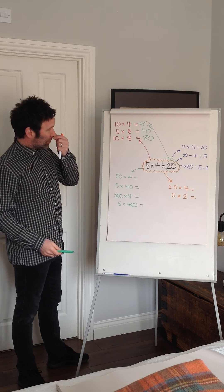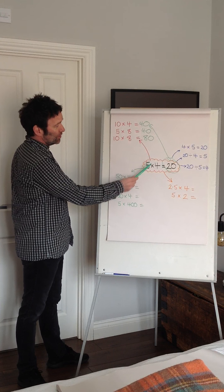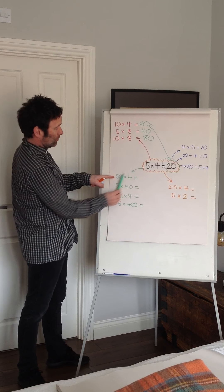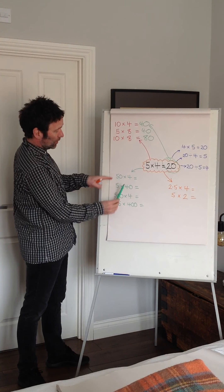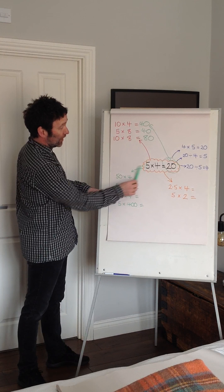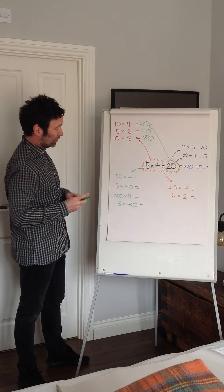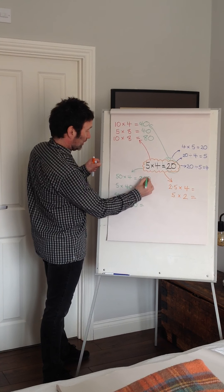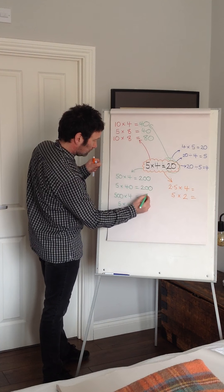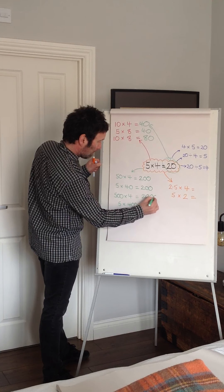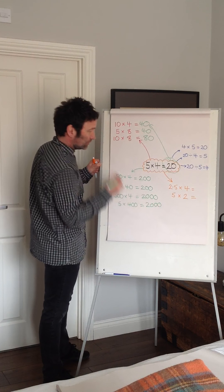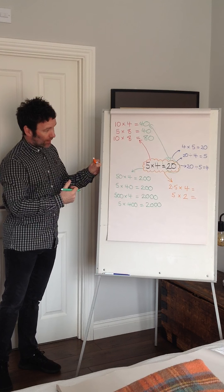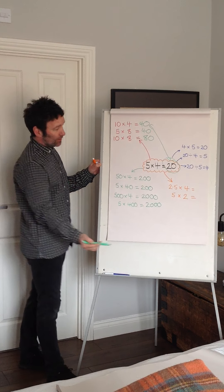The other element in terms of place value is that children should start to realize — again, using a calculator, no problem — what happens if I do 50 times 4, or 5 times 40, or 500 times 4, or 5 times 400? Type those into the calculator and when you've got your answers, start to explore what you notice. We can start to generalize about bigger numbers quite quickly.